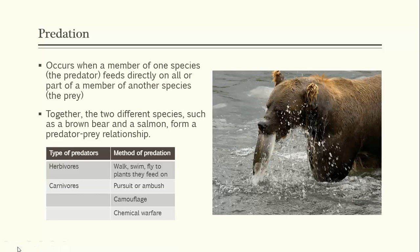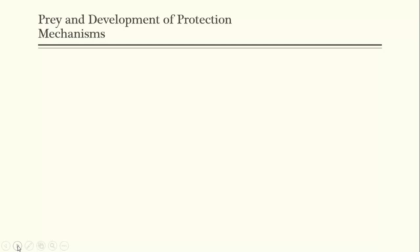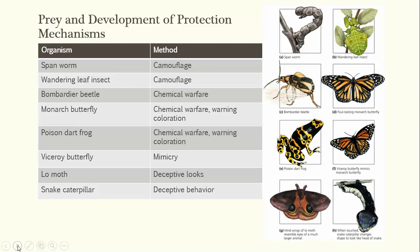Prey develop protective mechanisms in response to predation. Organisms like the span worm and wandering leaf insect camouflage themselves to hide from predators. The bombardier beetle, monarch butterfly, and poison dart frog all produce chemicals that are either foul-tasting or venomous. Some use a chemical spray — much like a skunk — as chemical warfare. Warning coloration, such as the bright colors of the poison dart frog and monarch butterfly, warns off predators by appearing intimidating.